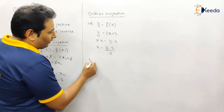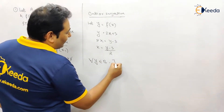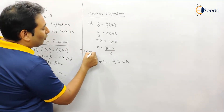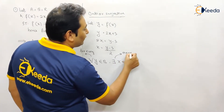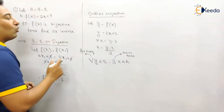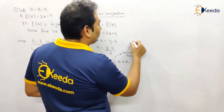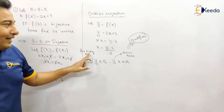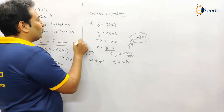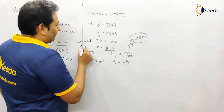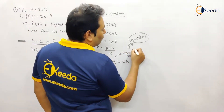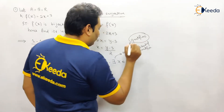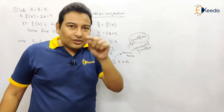Now the technical statement: for every y belonging to B, there exists some x belonging to A. 'For every' is the universal quantifier, and 'there exists' is the existential quantifier. Together they are called quantifiers. The universal quantifier and existential quantifier are important terms to remember.